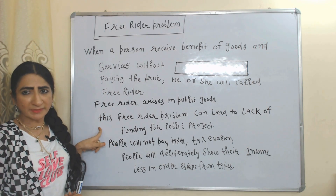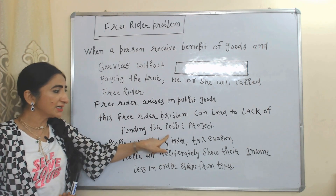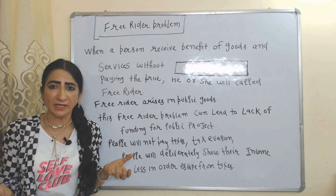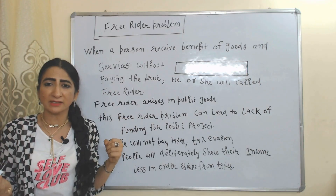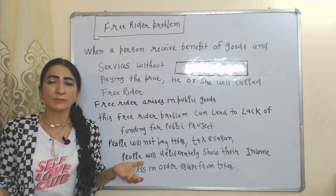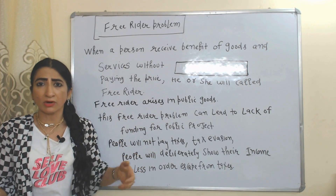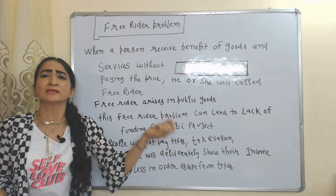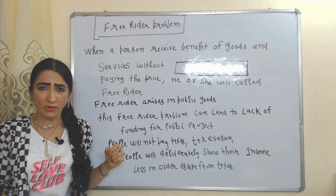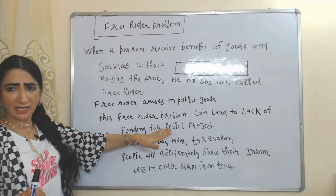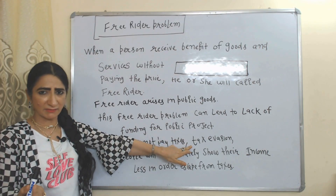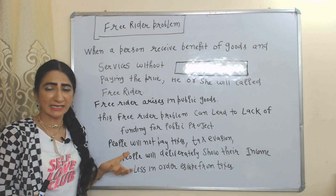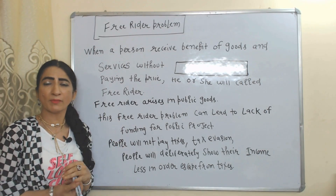The free rider problem can lead to a lack of funding for public projects. Suppose the government needs funds for providing public goods, but people are not paying taxes because they know nobody can exclude them from using public goods. So the free rider problem can lead to tax evasion, as people deliberately show their income as less in order to escape from taxes.